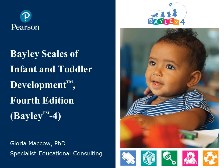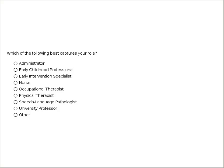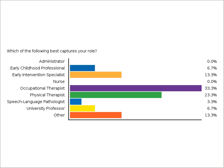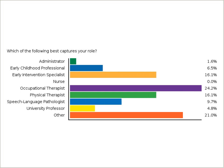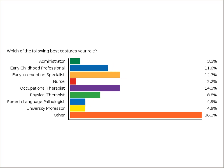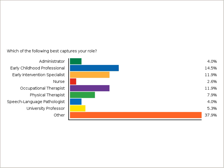We will publish the Bayley IV later this year. Before we get started, just to give us an idea of who has joined us today, if you would take a second and identify the professional role that best captures your role — whether you're an administrator, early childhood professional, physical or occupational therapist. Looks like most of you fall in the 'other' category. We have early childhood professionals, early intervention specialists, occupational therapists, physical therapists, and most of you fall into other, which might include directors or program managers for early intervention programs.